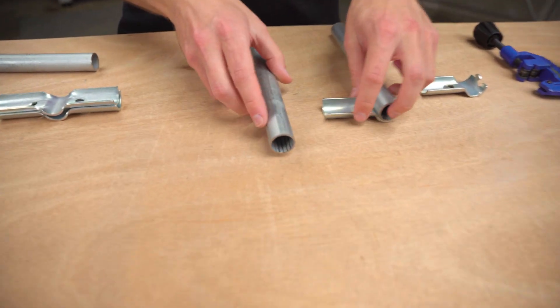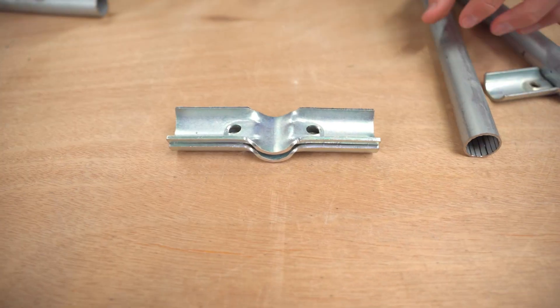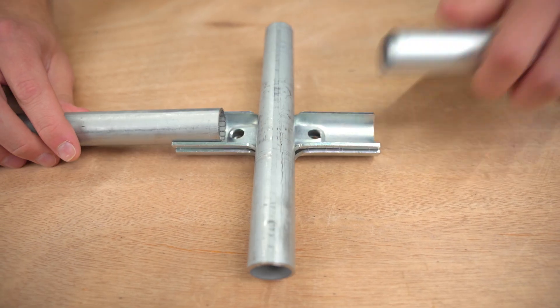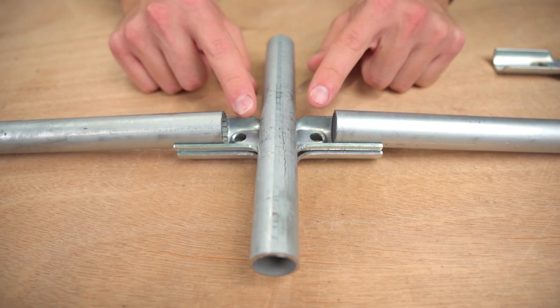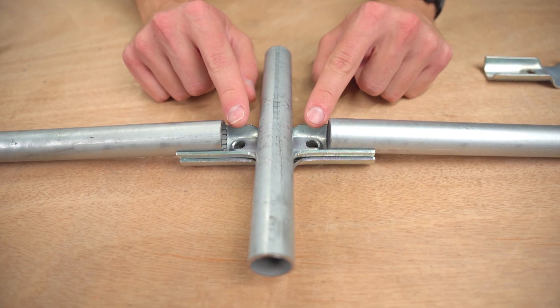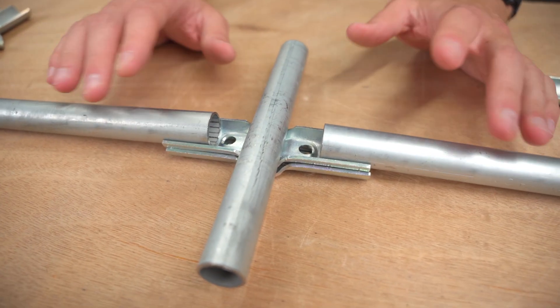Another thing too, is you'll see with other connectors, like the Maker Pipe 180 degree connector, where you're going to have three pieces of EMT conduit. You're going to have one in the middle and then one on the outside. And just like with the T connector we looked at, you're going to have this gap here that needs to be there so that the bolts can go through the connector and securely clamp it around the EMT conduit.